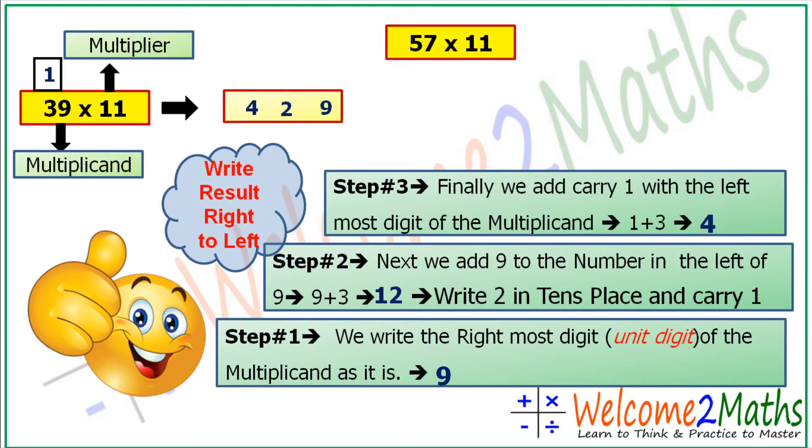At first, 57 into 11. Let's do it. At first, the rightmost digit of 57, so let's write 7, that is 7. And after that, 7 plus 5 is 12. So let's write 2 in tens place and 1 becomes a carry. So 5 plus 1 is 6.